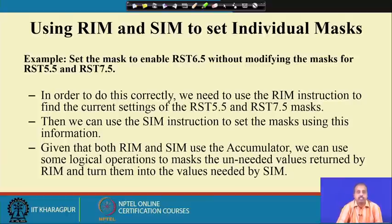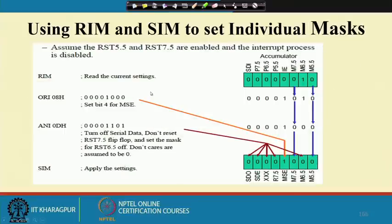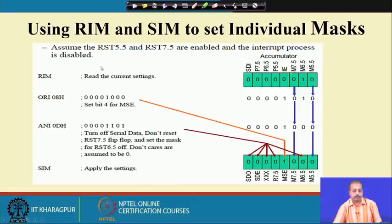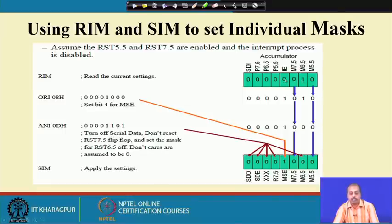We first execute a RIM instruction to know the current setting of 5.5 and 7.5, then use a SIM instruction after modifying the accumulator. Suppose the current setting is: RST 5.5 and 7.5 are enabled, interrupt process is disabled, and 6.5 is disabled. After executing RIM we get the corresponding bit pattern. To allow this mask setting, we OR this content with 0x08 so the MSE bit is set to 1.